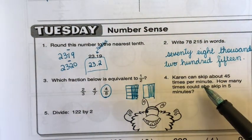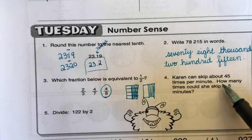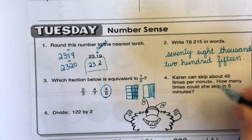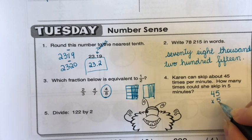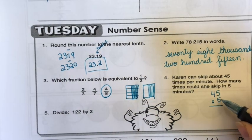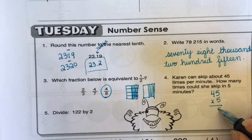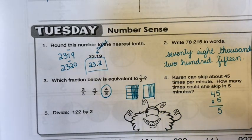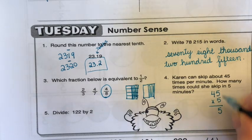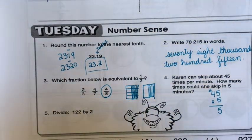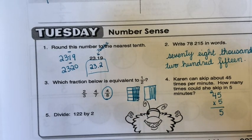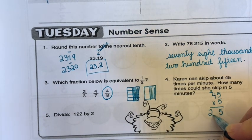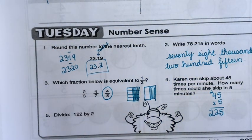Karen can skip about 45 times per minute. Whoa, way to go, Karen. How many times could she skip in five minutes? So all we're going to do is we're going to do 45 times five. Five times five is 25. I put my five here. I'm going to do grandma, grandpa's way. You can also do partial products. I put my five here and now I have two tens to remember up there. Now five times 40. I do five times four is 20. And then I add two more tens. So I have 22 tens. 225 times in five minutes.